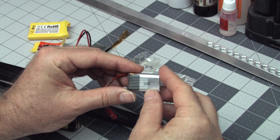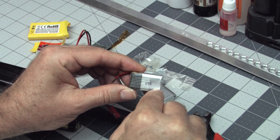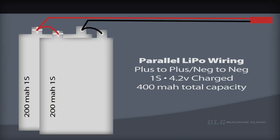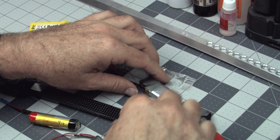You can take them apart and convert them from series which is plus minus plus minus to a 1S which is plus plus minus minus. So basically you combine the milliamp ratings which is 200. So we add 200 and 200, that's going to be 400 milliamps at a 1S voltage. So the voltage drops down but the capacity goes up. Let me show you how to disassemble a pack.